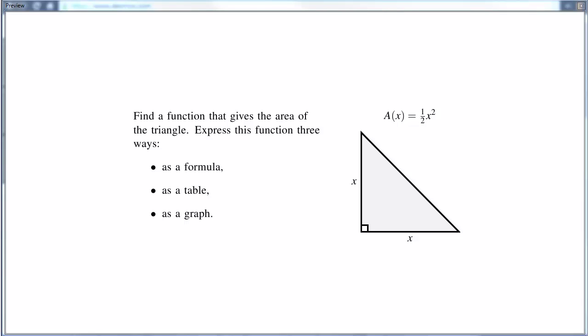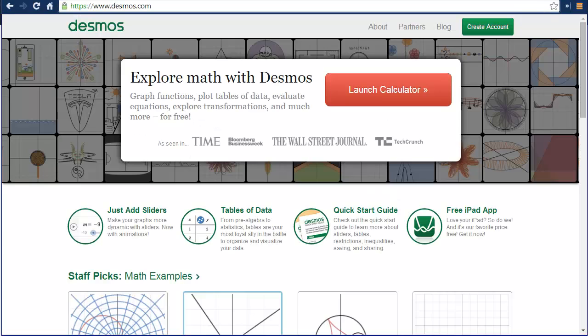Now, that's actually the first part. We've expressed it as a formula. But now, we want to learn how to express it as a table and as a graph. And in our class, we're going to be using the Desmos graphing calculator to help us out. So we're going to go to desmos.com. That's D-E-S-M-O-S dot com, and we launch the calculator.